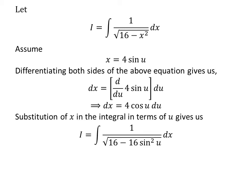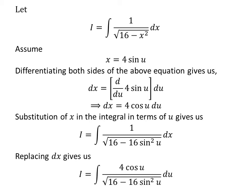Substitution of x in the integral i gives us i is equal to integral of 1 upon square root of 16 minus 16 times square of sine of u. Let us replace differential of x by its value which we had found out earlier. So, i is equal to integral of 4 times cosine of u upon square root of 16 minus 16 times square of sine of u.